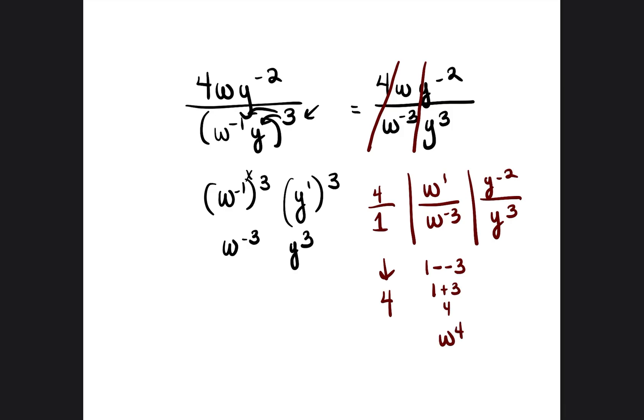Then we subtract the y exponents. So it'll be negative 2 minus 3, which is negative 5. So it'll be y to the negative 5.